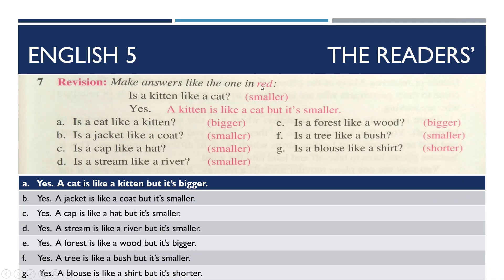Next, make answers like the one in red. 'A kitten is like a cat' — kitten بلی کے بچے کو کہتے ہیں۔ So the question is: Is a kitten like a cat? Yes, a kitten is like a cat, but it is smaller. یہ hint دیں گے اور اس hint سے آپ answer بنائیں گے۔ Next: Is a cat like a kitten? Yes, a cat is like a kitten, but it is bigger.